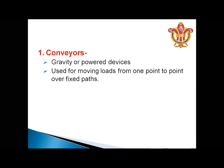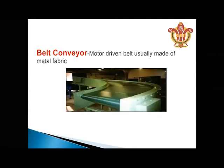Conveyors use gravity or power devices and are used for moving loads from one point to another over a fixed path. This is the belt conveyor diagram — a motor-driven belt conveyor usually made of metal fabric, which moves items along the conveyor path.